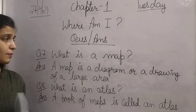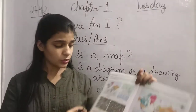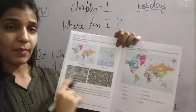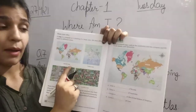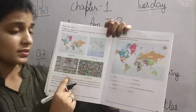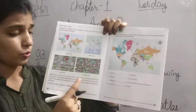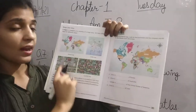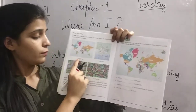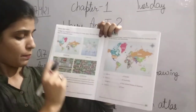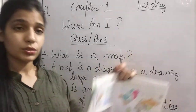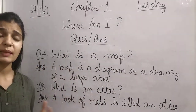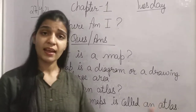We are talking about maps. At page number 6 in your book there are some maps: world map, India's map, city map, and locality map — they are all different types of maps. The book which contains all these different maps is called an atlas.